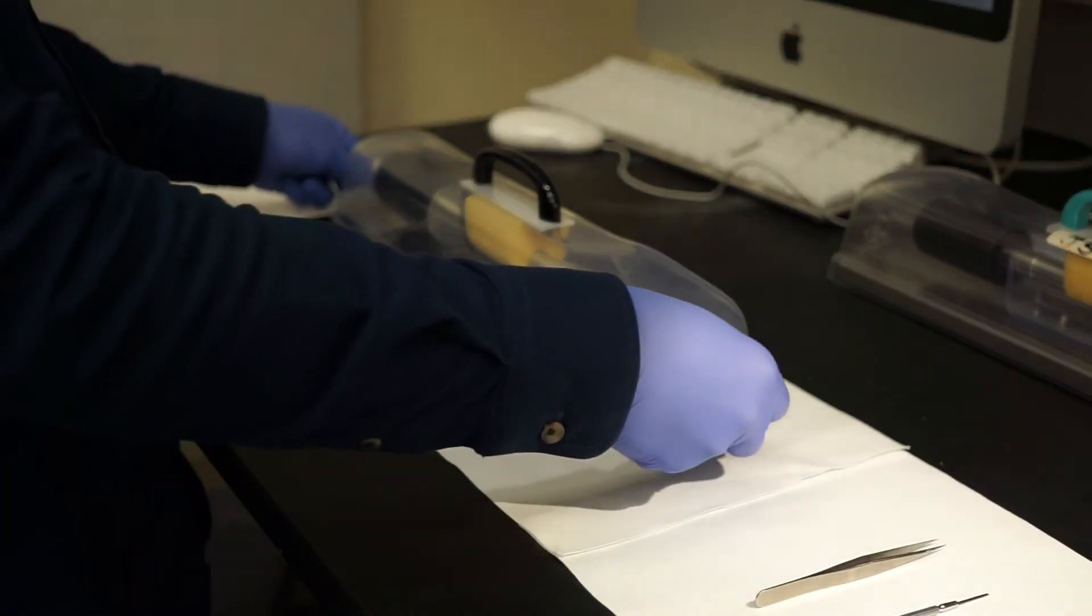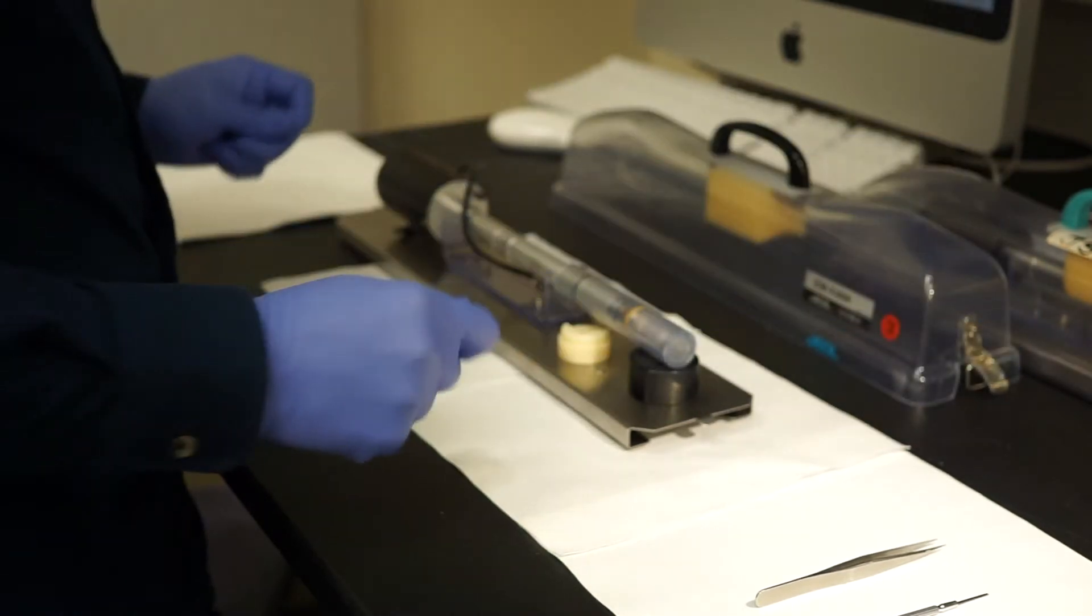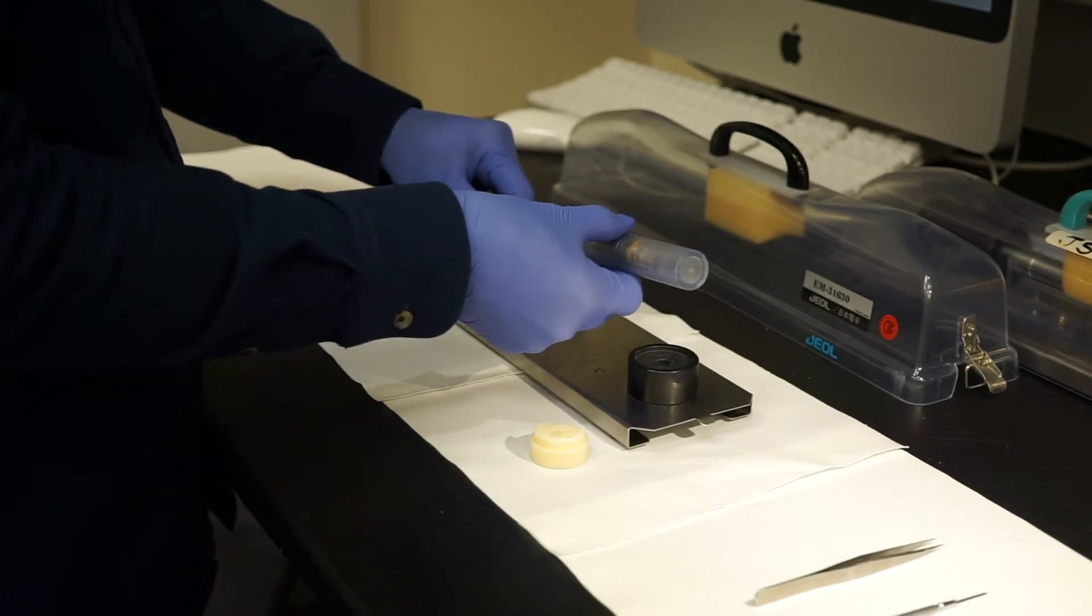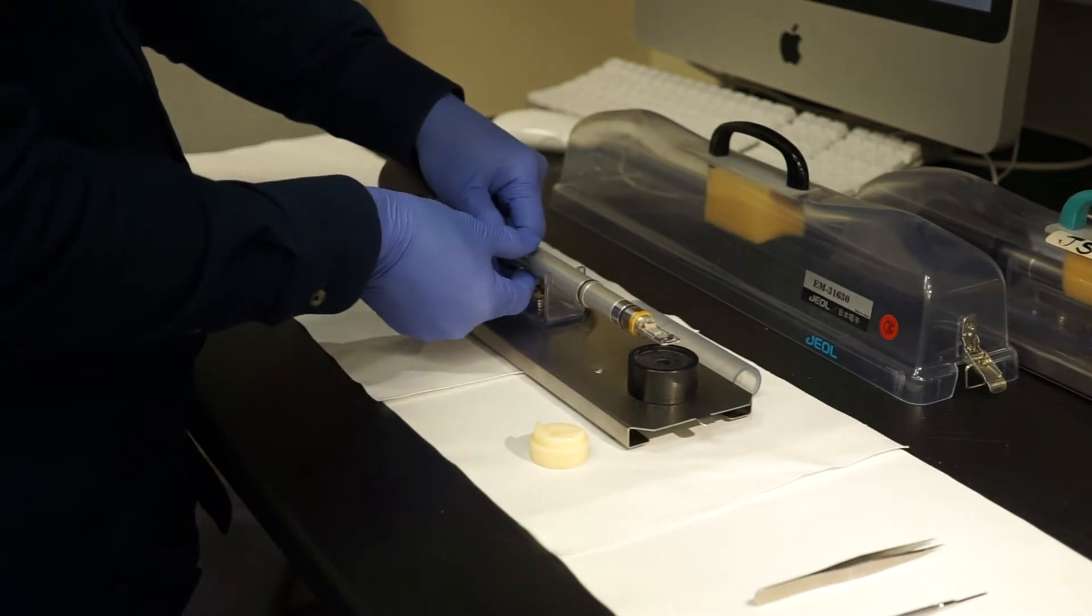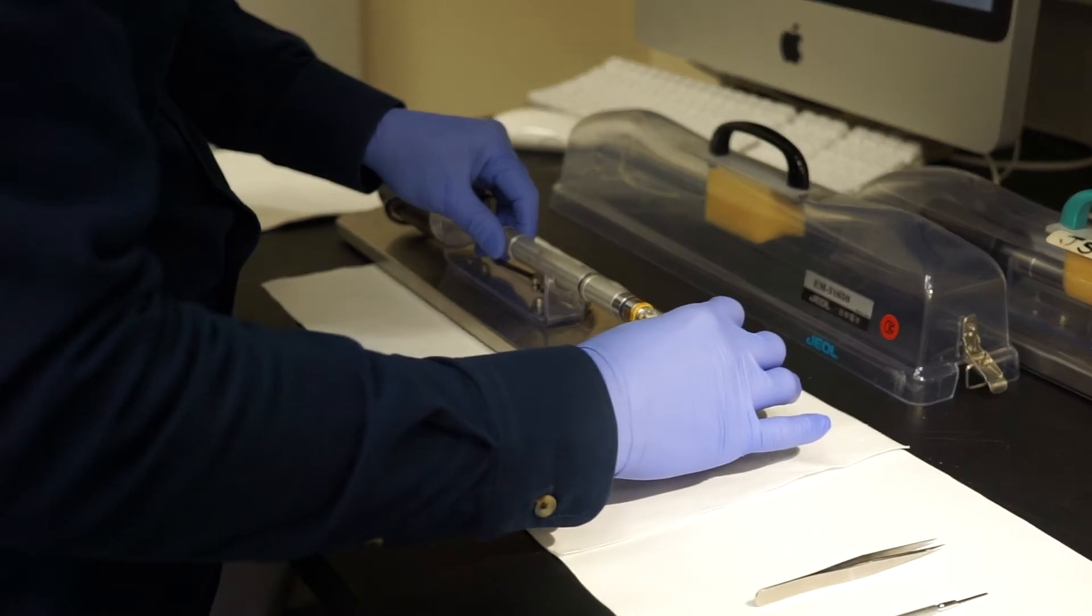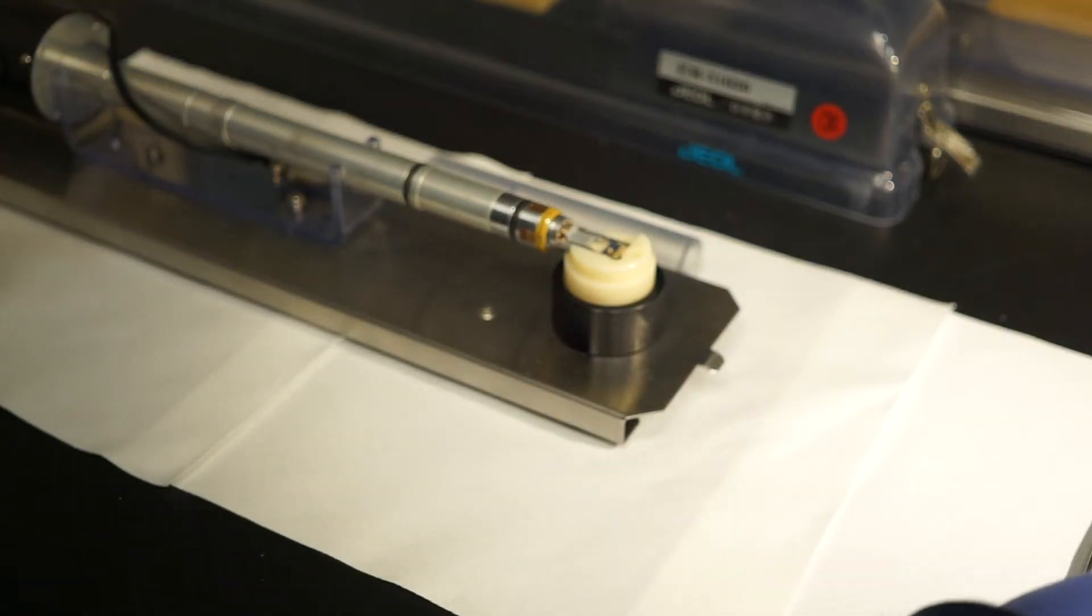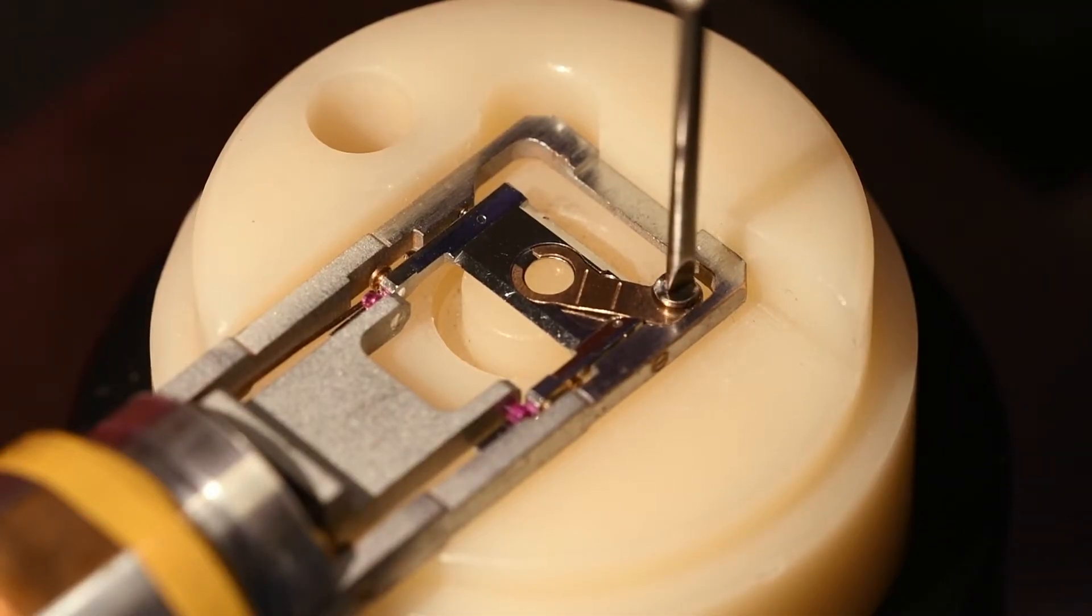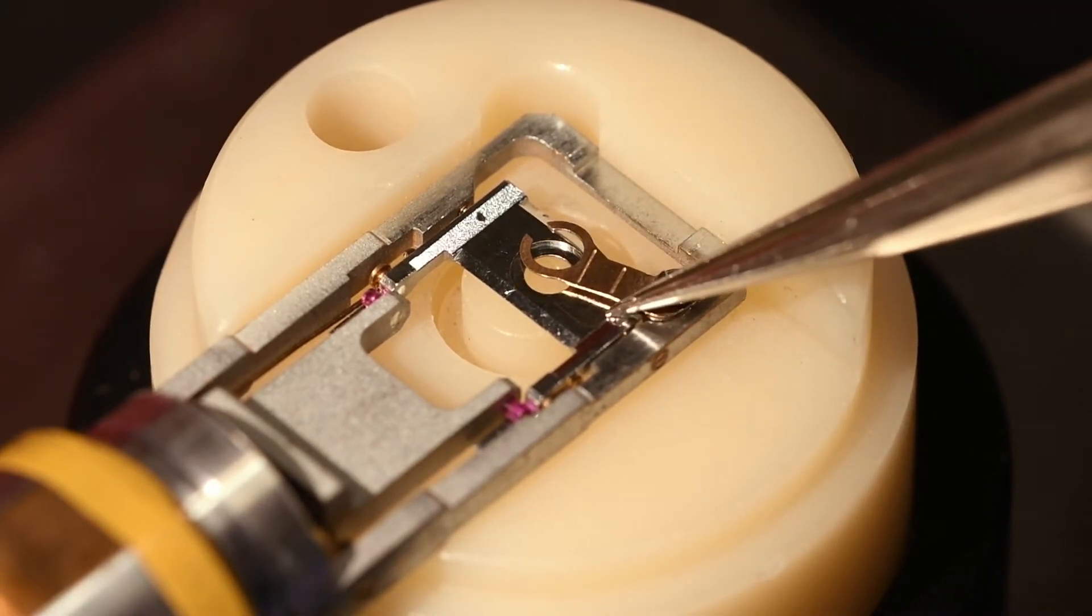To begin, remove the lid from the carrying case, remove the protective cap, and place the beige support disc underneath the end of the sample holder. Using a small flathead screwdriver, loosen the screw that holds the retaining arm in place. With tweezers, move the retaining arm aside and place your sample in the sample well.